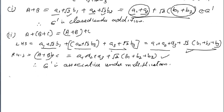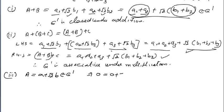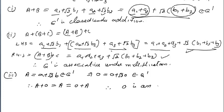The third property to check for addition is the identity. For a = a + √2·b belonging to Q', there exists 0 = 0 + √2·0, which belongs to Q', such that a + 0 = a = 0 + a. Therefore 0 is the additive identity of Q'.